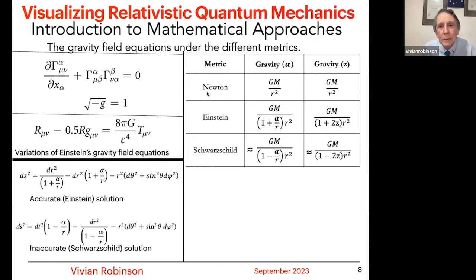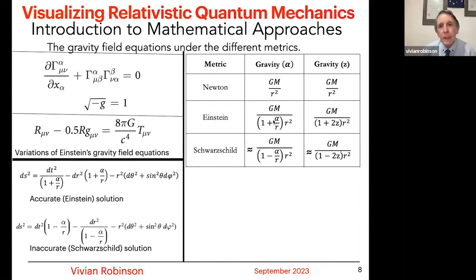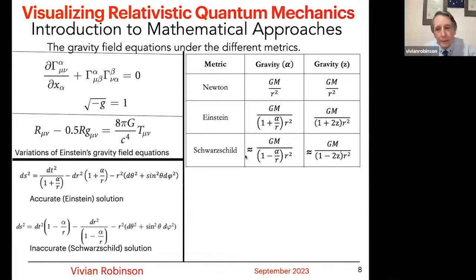To find out how it works in practice: Newton's inverse square law, gm over r squared, is well known. The exact solution is gm over 1 plus alpha over r times r squared, or gm over 1 plus 2z times r squared, where z is the redshift. These just show that despite all of the complexities, when you work your way through it, you find Einstein's solutions are just a minor variation. Rather than Newton's theorem being the first approximation to Einstein's theory, Einstein's theory is a minor modification to Newton's theorem.